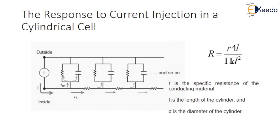The analogous electrical circuit for a long cylindrical cell is shown in this slide. To reach the parallel resistor and capacitor at progressively more distant portions of the cell membrane, current injected at one end of the cell must flow through the resistance provided by the interior of the cell. These resistances can be quite large for cylindrical neurites of neurons. The resistance of the cylindrical conductor is given by R = r × 4l / (π × d²), where r is the specific resistance of the conducting material, l is the length of the cylinder, and d is the diameter of the cylinder.